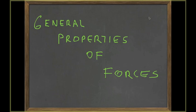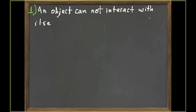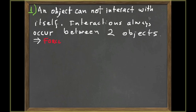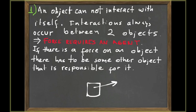Let's now talk about general properties of forces. We will discuss more specific forces later when we talk about normal force, tension, and so on, but right now we want to talk about properties that all forces share. The first one is that an object cannot interact with itself — interactions always occur between two objects. This means that force requires an agent. If there is a force acting on an object, there must be another object nearby responsible for that force. Never draw a force acting on an object if you haven't identified the object responsible for applying that force.